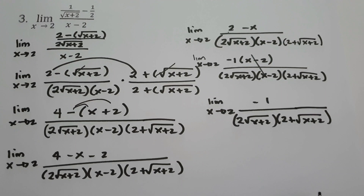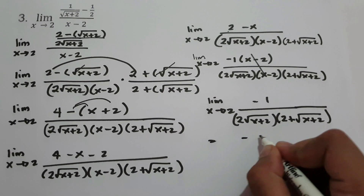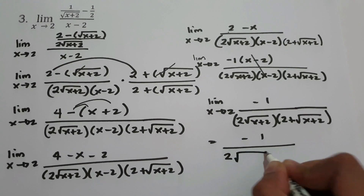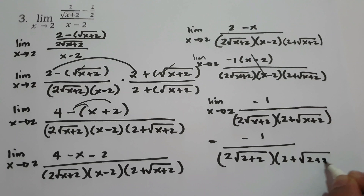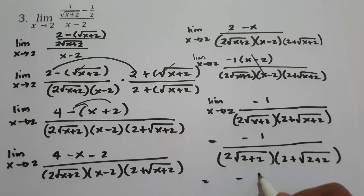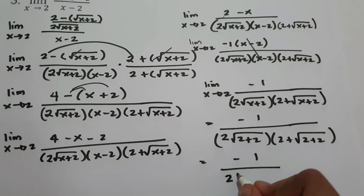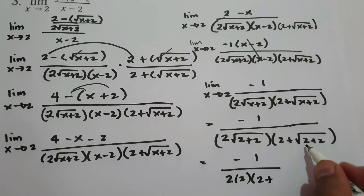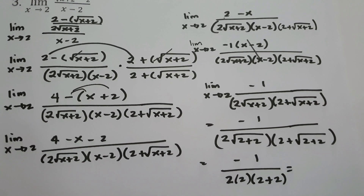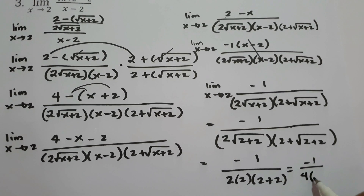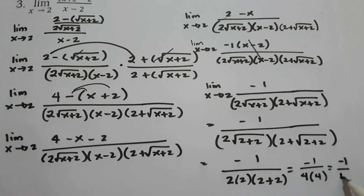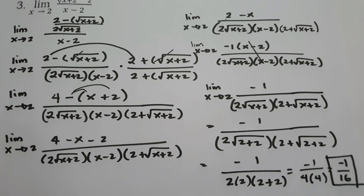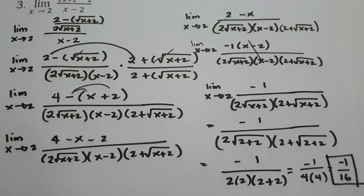Now we can substitute x equals 2, giving negative 1 over 2 times square root of 2 plus 2, times 2 plus square root of 2 plus 2. Since 2 plus 2 is 4 and the square root of 4 is 2, we have negative 1 over 2 times 2, times 2 plus 2, which is 4 times 4. Our final answer is negative 1 over 16. I hope you learned from this lesson. Thank you so much for watching, and God bless us all.